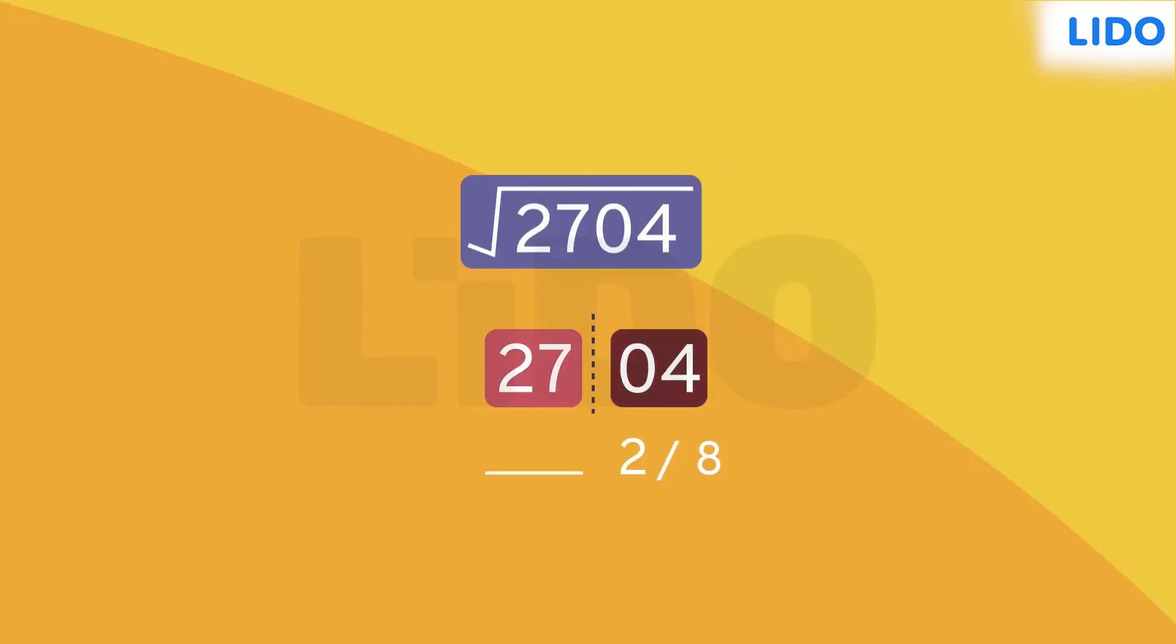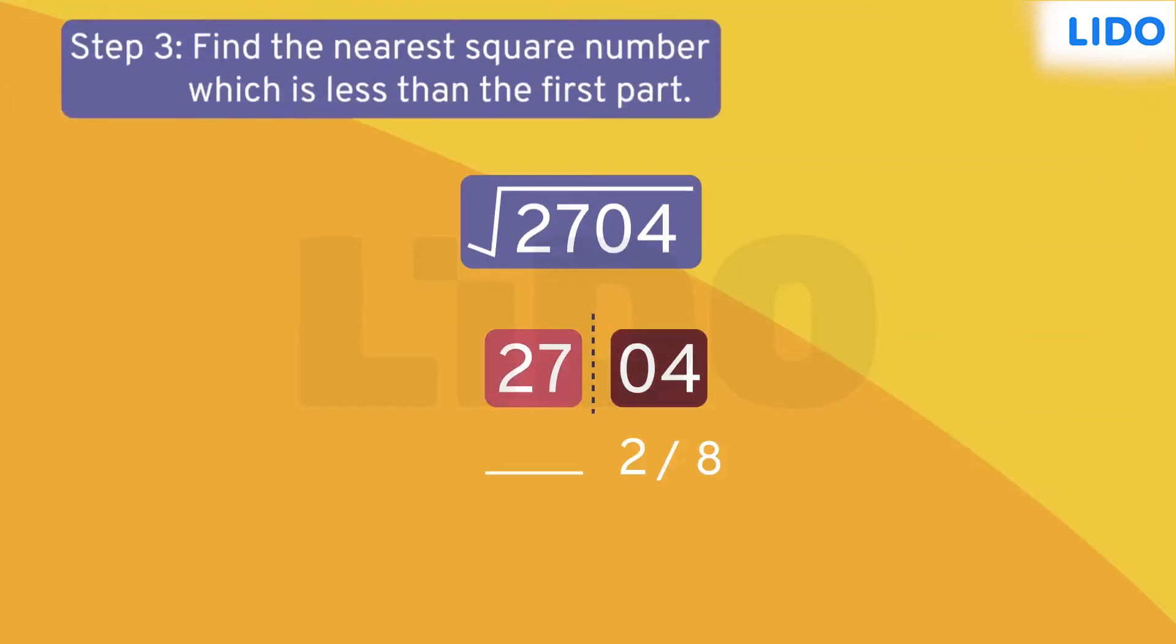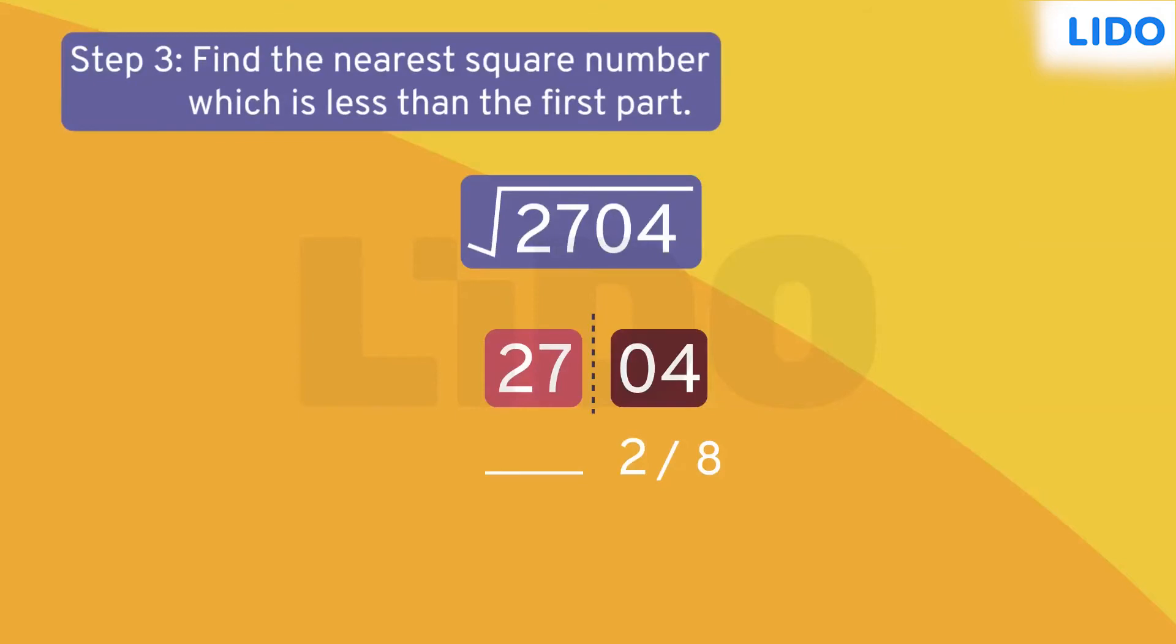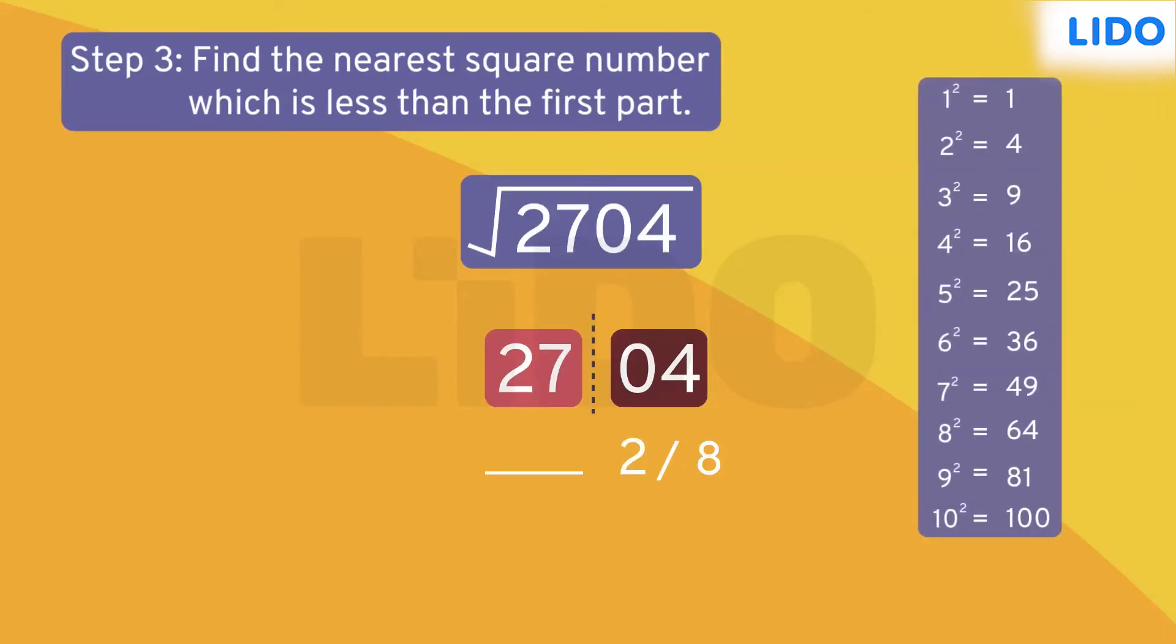Let's move to the first part. Now the next step is to find the nearest square number which is less than the first part. The first part is 27.